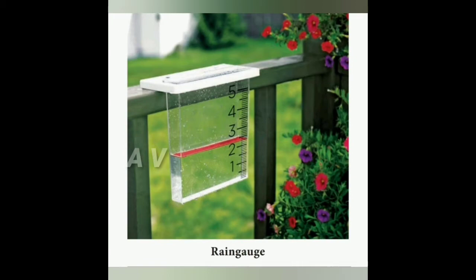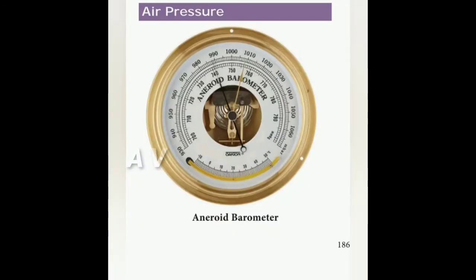The weight of air above a given area on the earth's surface is called atmospheric pressure or air pressure. The weight of air differs across the earth's surface. Air pressure is measured by a barometer, and high pressure leads to fair and calm weather.